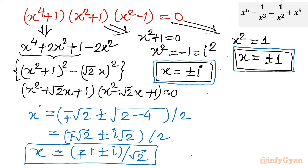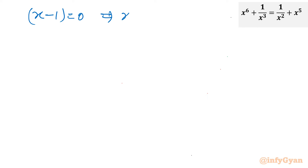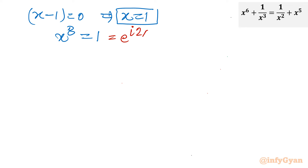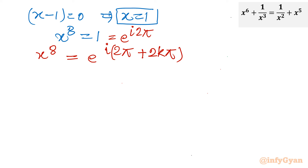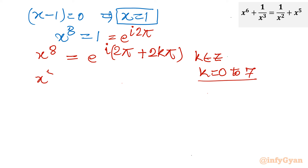Now let us consider Method 2 using complex numbers. From x - 1 = 0 we get x = 1 as before. For the second equation x^8 = 1, I write it using Euler's identity as x^8 = e^(i·2π). For the general solution I add 2kπ, so x^8 = e^(i·2π(k+1)) where k is an integer ranging from 0 to 7.